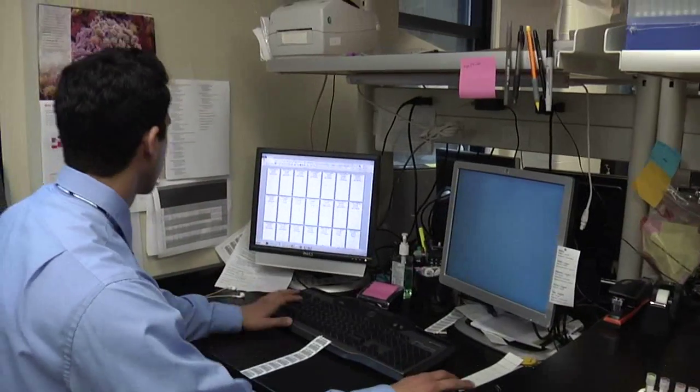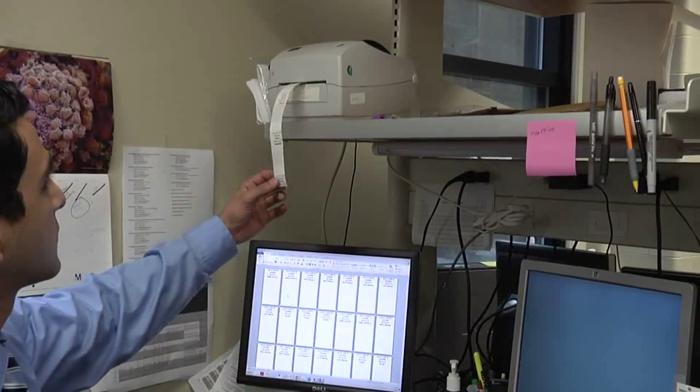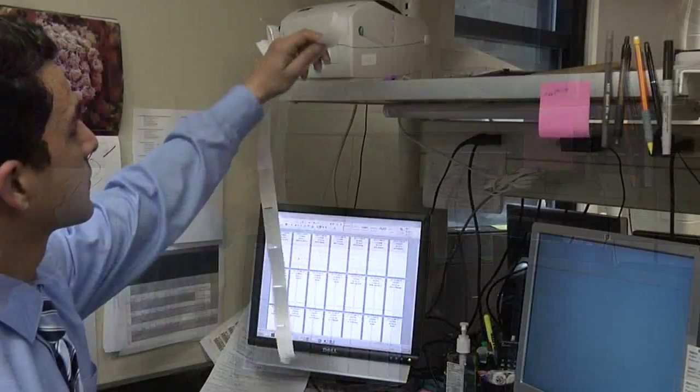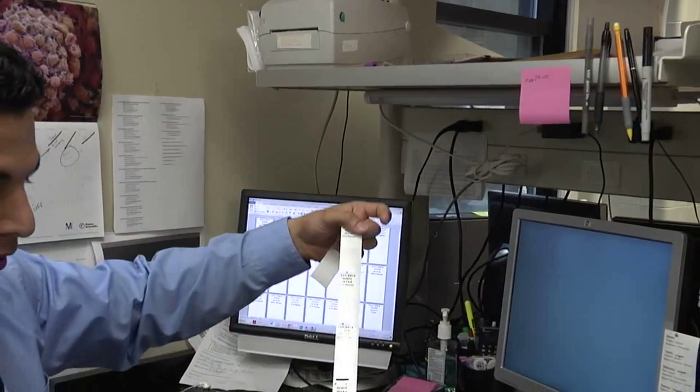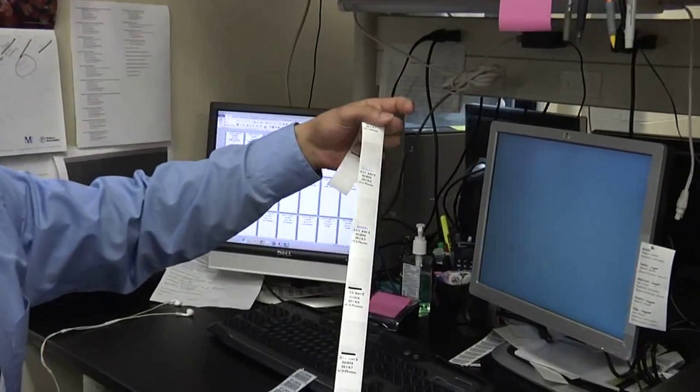Place the samples here and start printing off the labels. Here comes the labels. Each label has a barcode and a location of the tube.